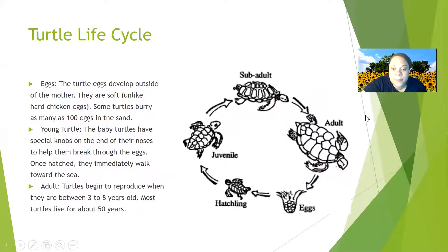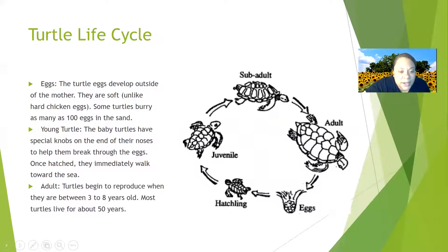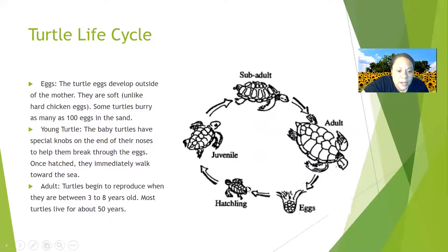Here's the turtle life cycle. Turtles also come from eggs — turtle eggs develop outside of the mother and are soft, unlike hard chicken eggs. Some turtles bury as many as 100 eggs in the sand. Baby turtles have special knobs on their noses to help them break through the egg. Once hatched, they immediately walk towards the sea. They go from hatchling to a larger young turtle, to sub-adult, and then to an adult. Turtles begin to reproduce around three to eight years old and most live about 50 years.